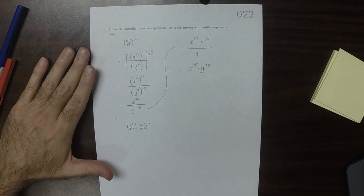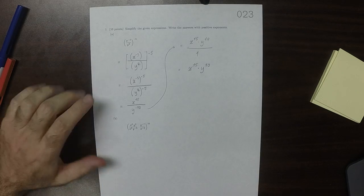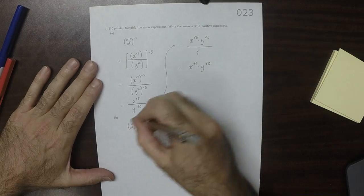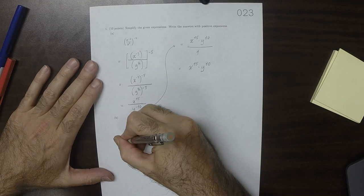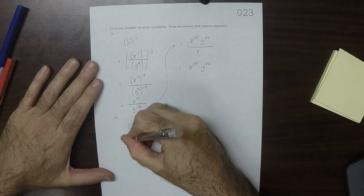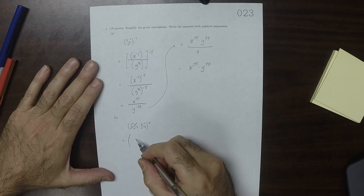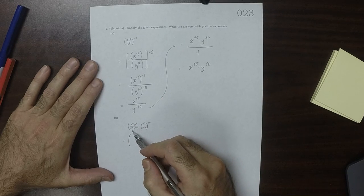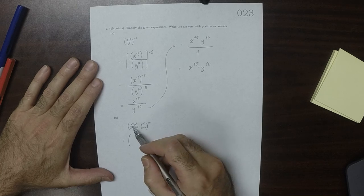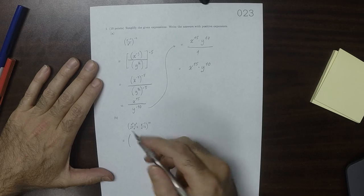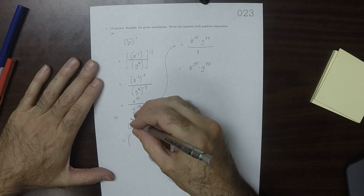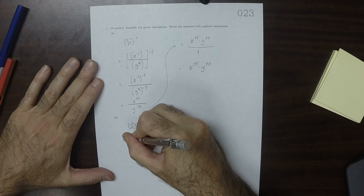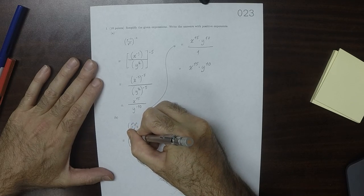So for part b, I'll start out by simplifying the expression inside of the parentheses. I can see for this term we have x to 6 over x to 3, so that would be x to 3 after canceling.